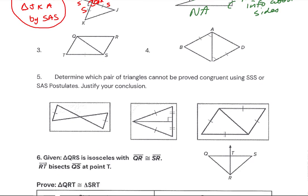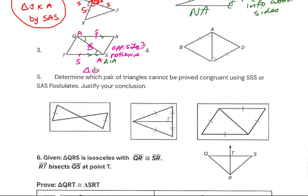Looking at number three, they're not telling us that those lines are parallel. But assuming they are parallel, we could use alternate interior angles and get angles RQS and TSQ congruent. QS is the side shared between them, and opposite sides of a parallelogram are congruent — so assuming it's a parallelogram, those two triangles are congruent by Side-Angle-Side.